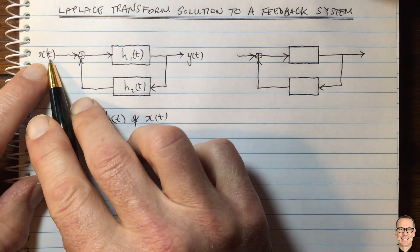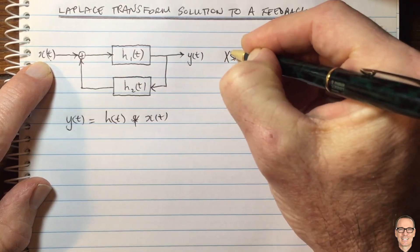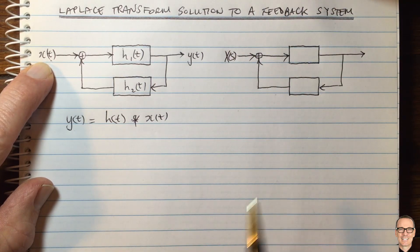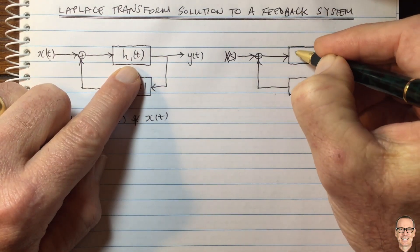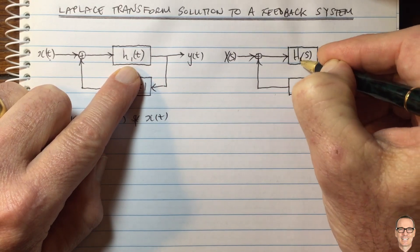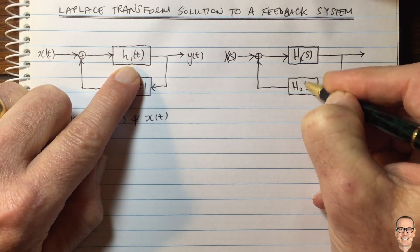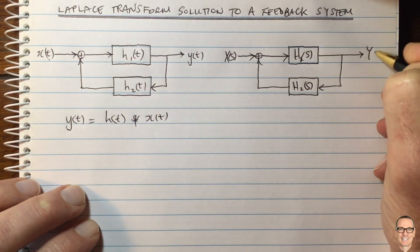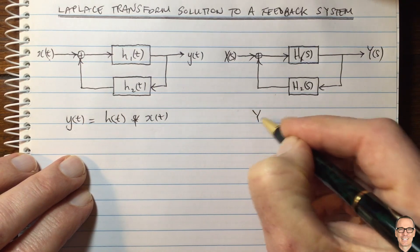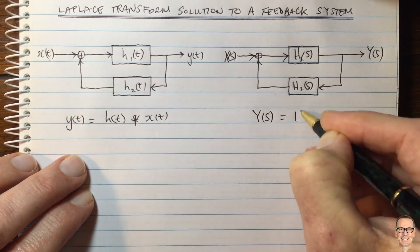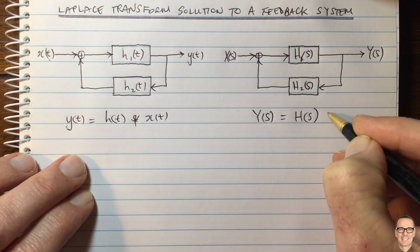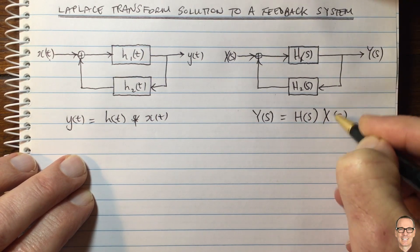The Laplace transform of X(T) is X(S), the Laplace transform of H1(T) is H1(S), H2(T) transforms to H2(S), and Y(T) transforms to Y(S). Now in the Laplace domain, Y(S) equals the overall transfer function H(S) times X(S) — and this is a multiplication, not a convolution.